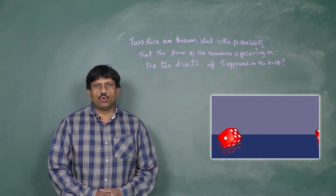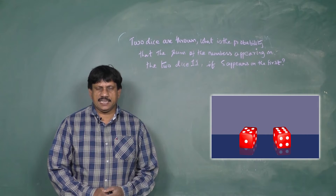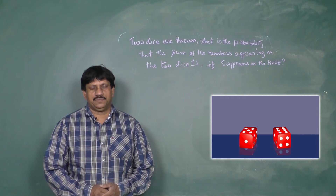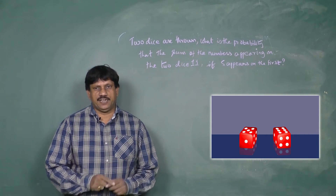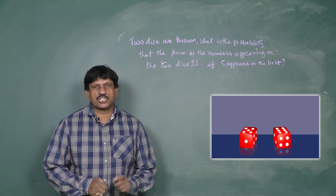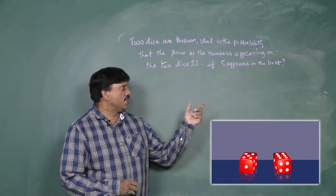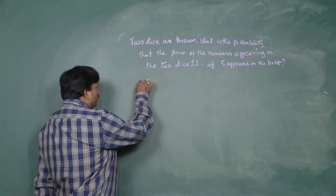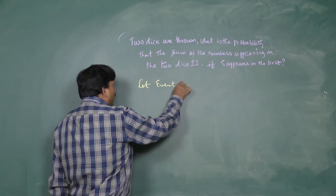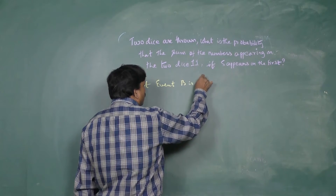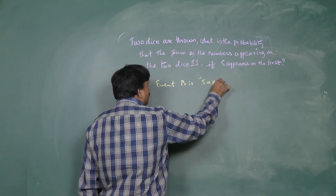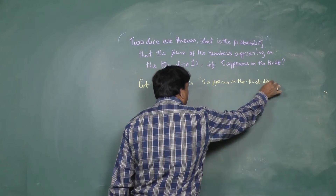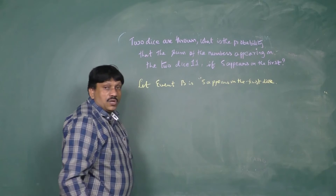Example 3: Two dice are thrown. What is the probability that the sum of the numbers appearing on the two dice is 11, if five appears on the first die? Five is already fixed — it is the given condition. Let event B be: five appears on the first die.